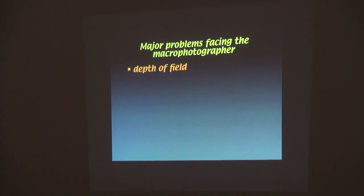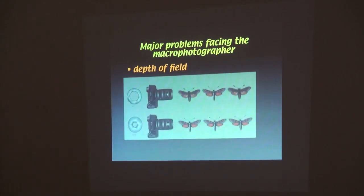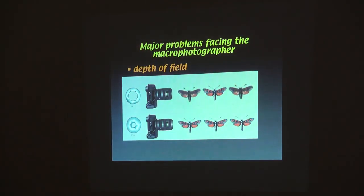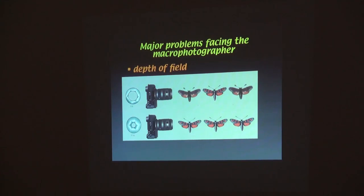Just remember: the closer you get to a subject, depth of field becomes an issue that you have to deal with. These are small aperture — these are all in focus. Big aperture, only the center is in focus. That's very important in macro photography. If your macro photography is not sharp, it's done. There's nothing you can do to fix it.